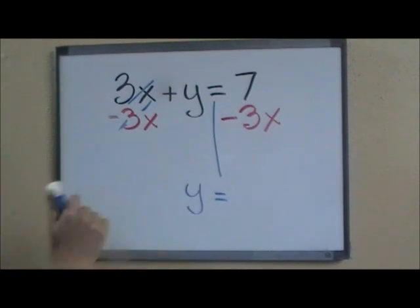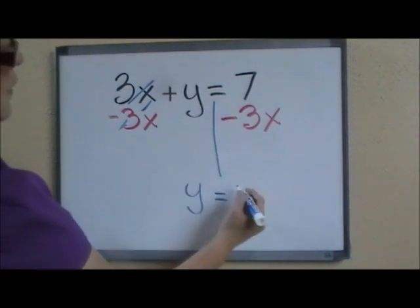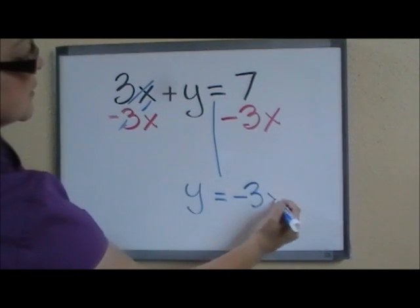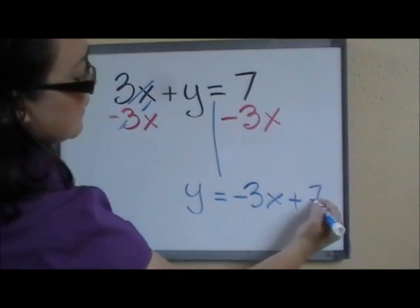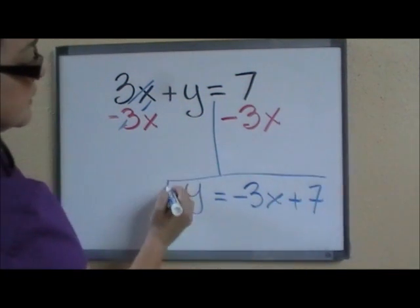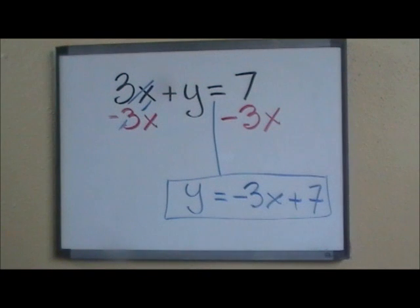But on the right side, I notice that I have a 7 and a negative 3x. They are not like terms, so I cannot combine them. What I'll do instead is just write them in order next to each other: first the negative 3x, then the positive 7. And this is my new equation.